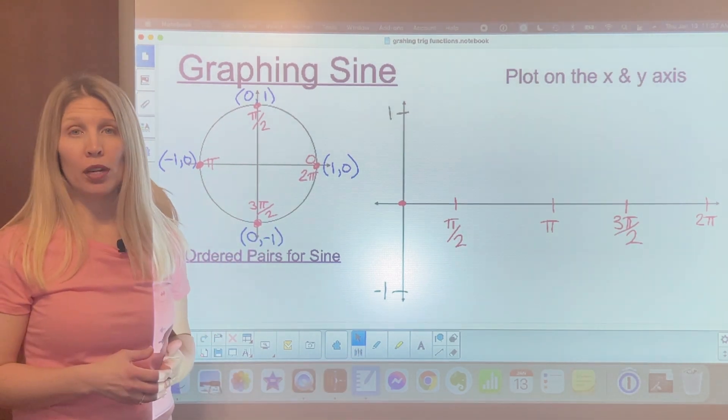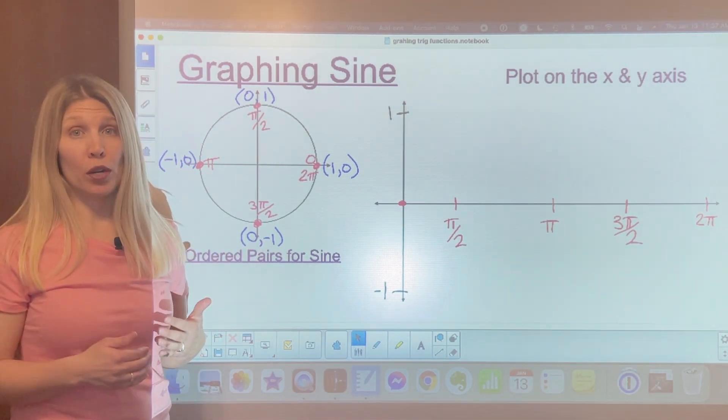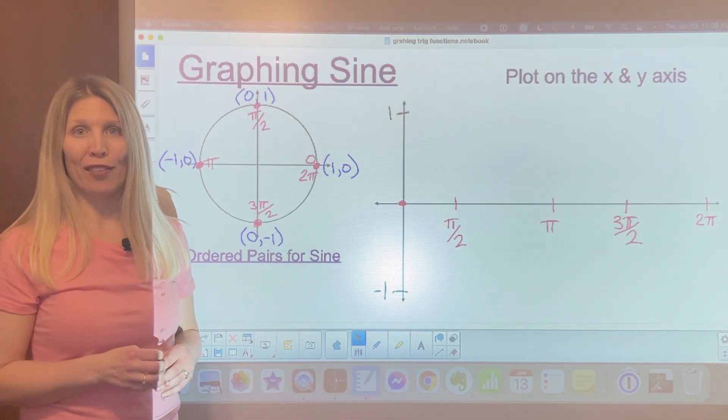The first thing that you'll see on the board is that I have the unit circle with all the points labeled and the coordinate points. That is what we're going to use to build our sine and our cosine graphs.